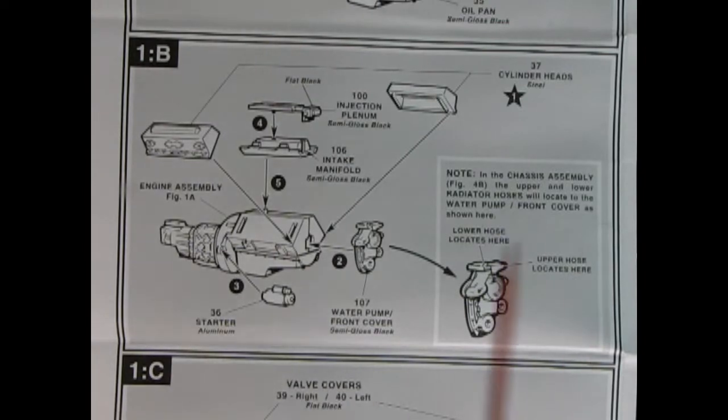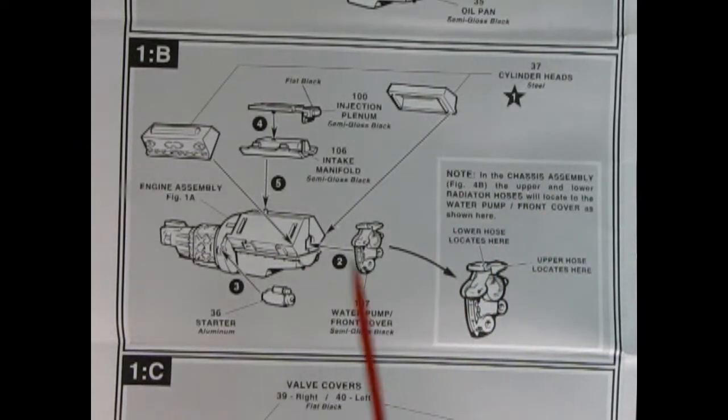All right, moving right along. We can now glue our cylinder heads onto the engine block. We've got our intake manifold and we've also got our injection plenum. And then here we've got our water pump and front cover and the starter motor. This is interesting. In the chassis assembly, figure 4B, the upper and lower radiator hoses will locate at the water pump front cover as shown here. Woohoo!